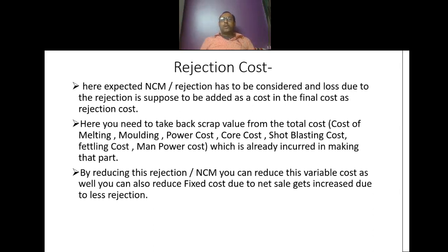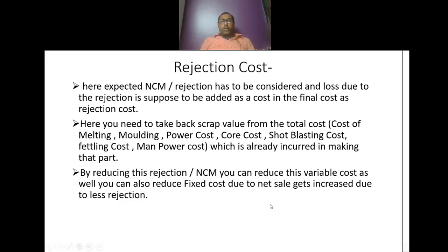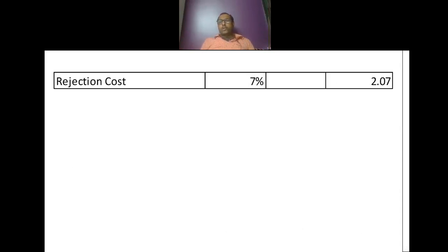Rejection cost: the expected non-conforming material (NCM), that is rejection, has to be considered, and the loss due to rejection is to be added as a cost in the final cost. You need to deduct scrap value from the total cost already incurred — melting, molding, power, core, shot blasting, fettling, and manpower — in making that rejected part. By reducing rejection, you can reduce this variable cost and also reduce fixed cost due to improved net sell rate. I have considered 7% rejection, giving a rejection cost of Rs 2.07 per kg.